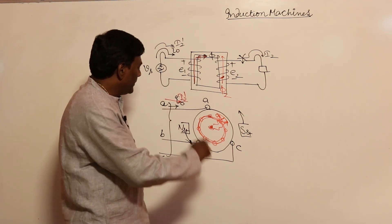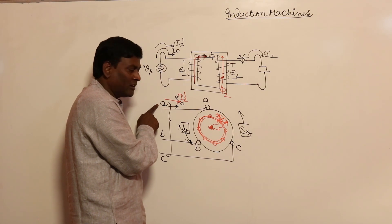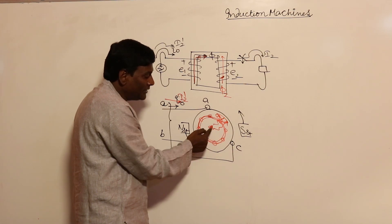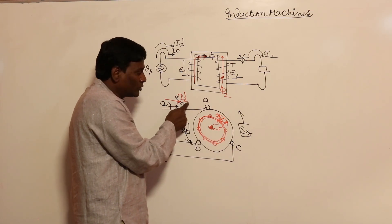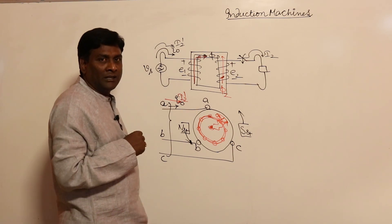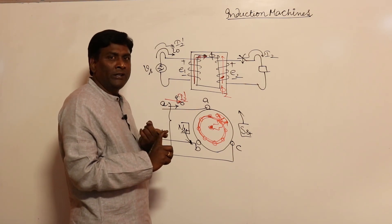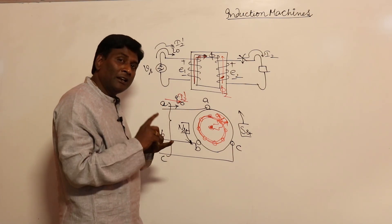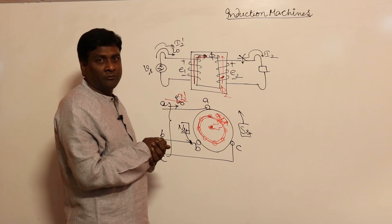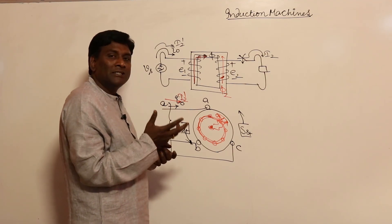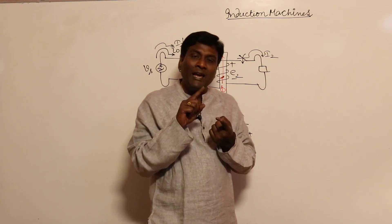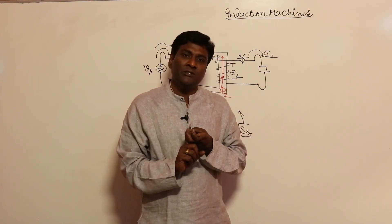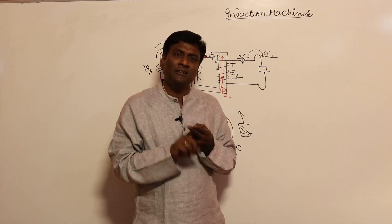So the stator winding takes current i0 to set up the flux, and also takes compensating current to cancel the rotor flux. Both the magnetizing current and the load component of current flow in a single winding — the stator. When both the field-setup current and armature current flow in only one winding, that is a singly excited machine.